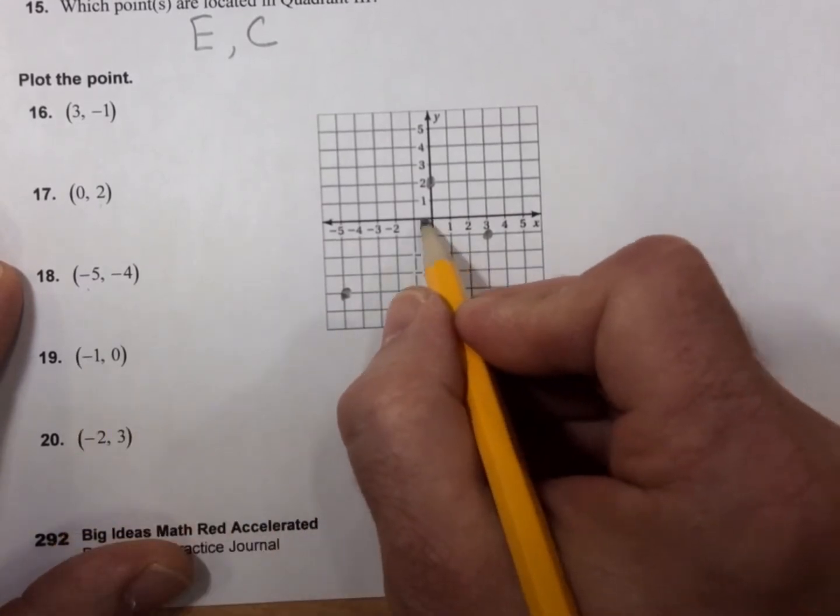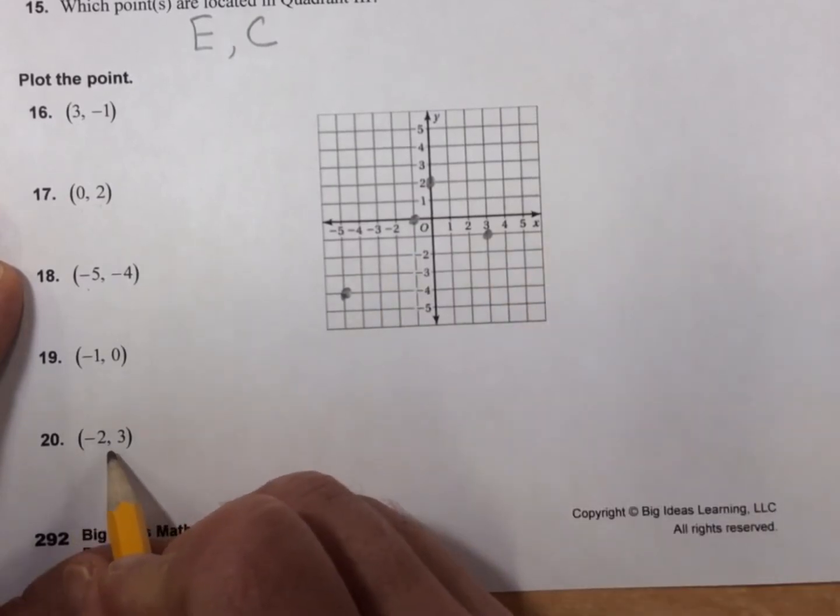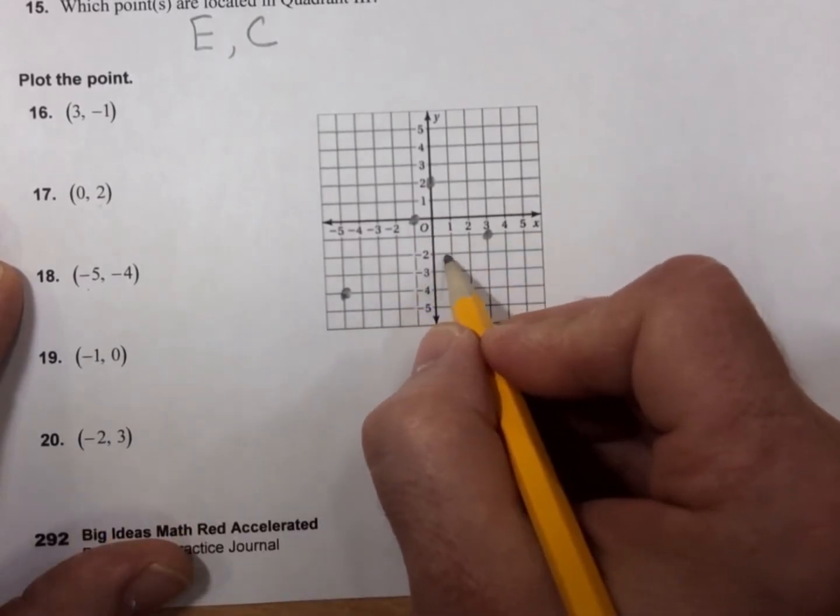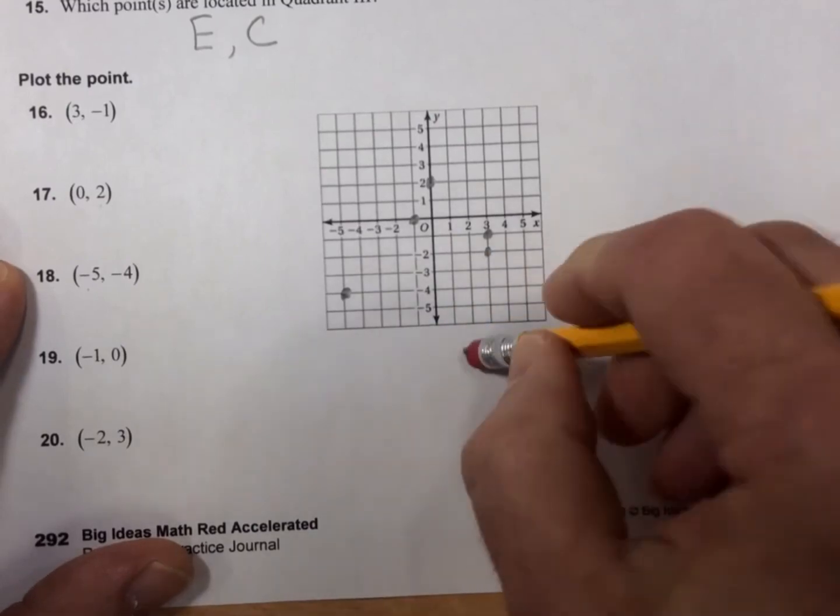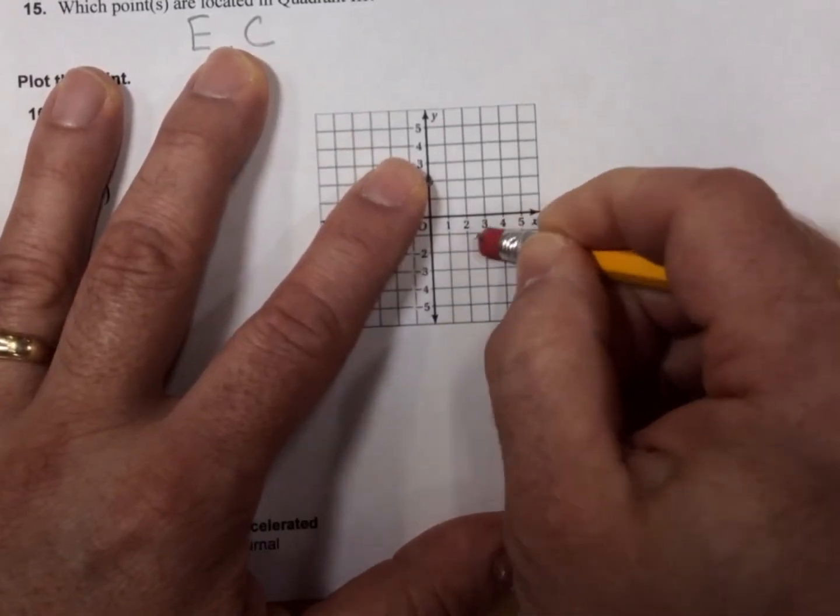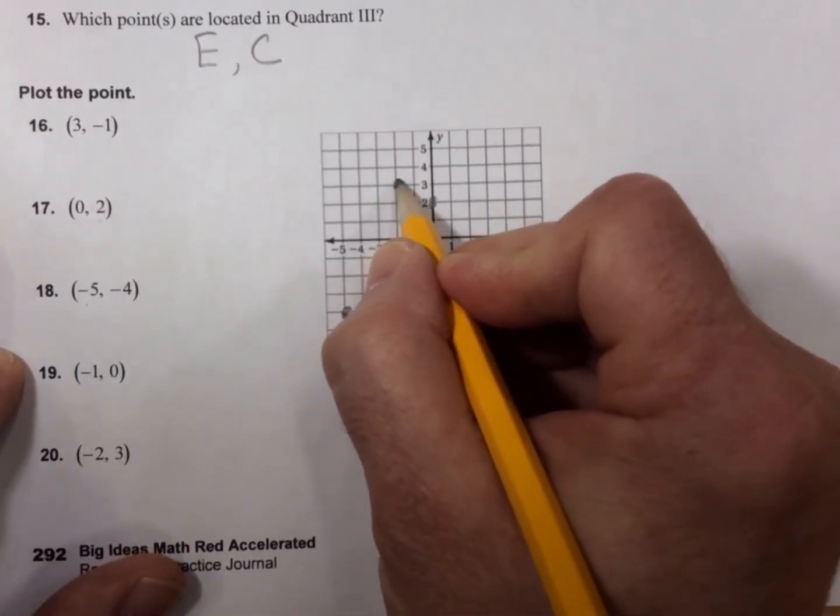(-1, 0). -1, 0. It stays right there. And (-2, 3). It would be -2, 3. No, it wouldn't. Sorry, that last one is -2, 3. That's better.